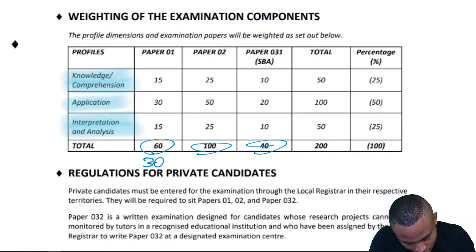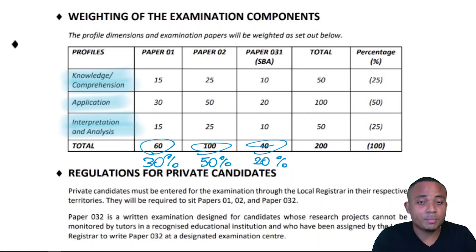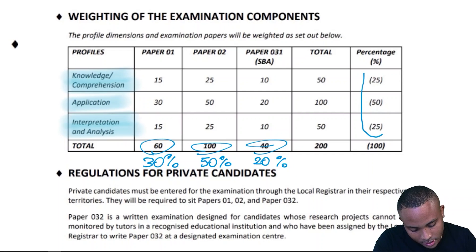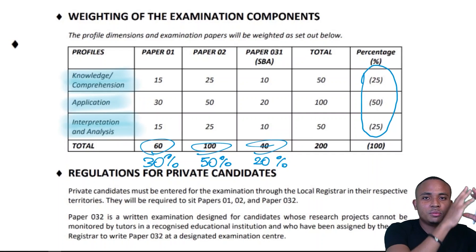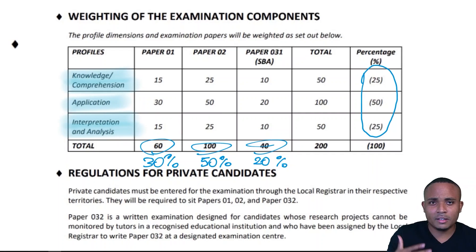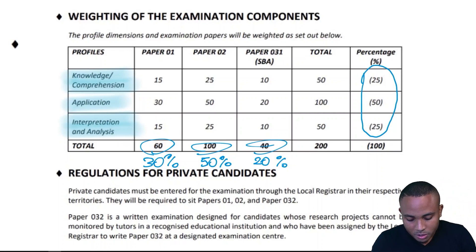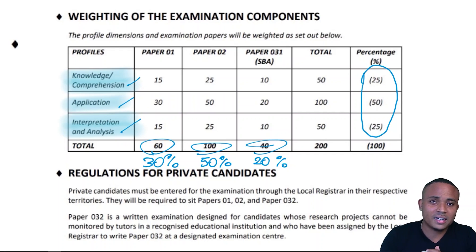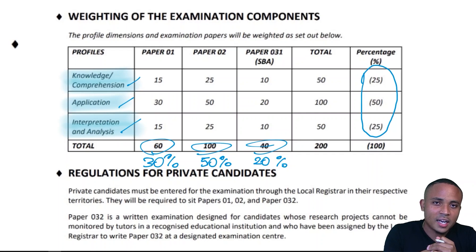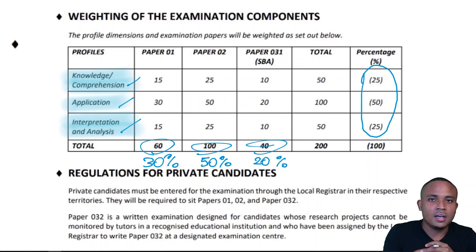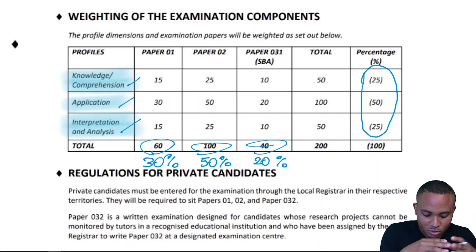When weighted by percentage: Paper 1 is 30%, Paper 2 is 50%, and Paper 3 is 20%. Your results will show a profile with ratings for knowledge and comprehension, application, and interpretation and analysis. You'll receive A, B, C, D, or E based on performance. All A's gives a distinction — a Grade 1 — and mostly A's gives a Grade 2, 3, and so on.